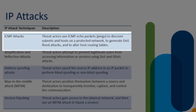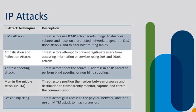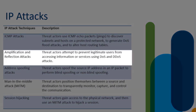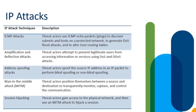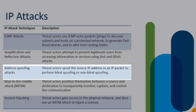Threat actors can also use ICMP to alter the host routing tables of a targeted device. With amplification and reflection attacks, threat actors prevent legitimate users from gaining access to information or using network services by leveraging denial of service and distributed denial of service attacks. With spoofing attacks, a threat actor can spoof the source IP on a packet — this can occur as blind spoofing or non-blind spoofing.